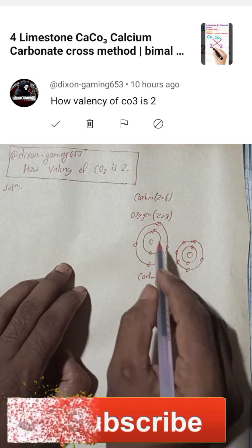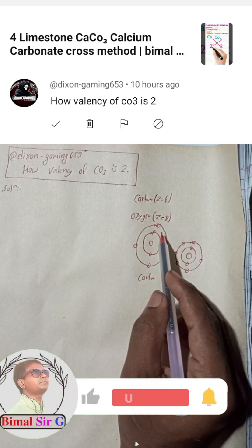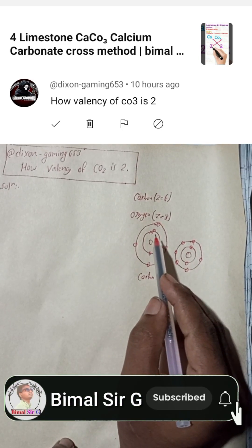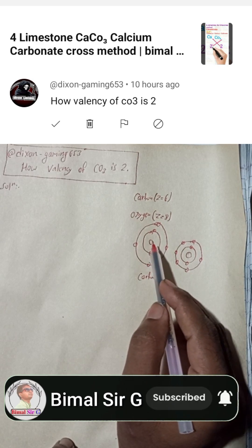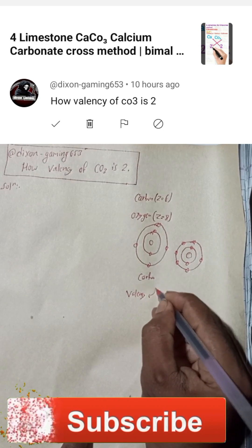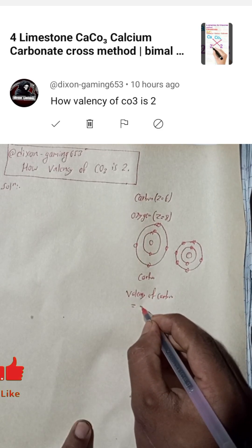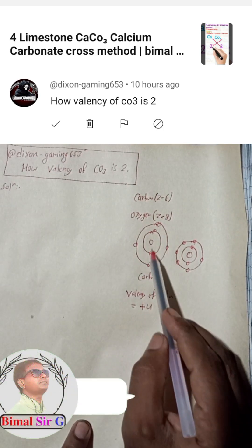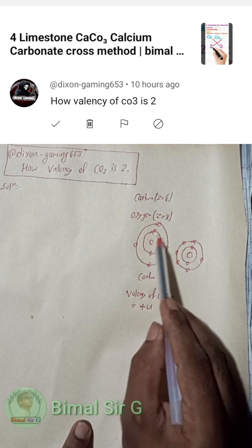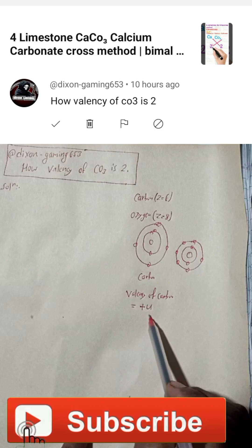Carbon needs 4 electrons to get the octet, so it will try to gain 4 electrons. But if it loses 4 electrons, it will be duplet. So the valency of carbon is plus 4, because if it donates 4 electrons, the donor will be positive. If it gives to others, it will be stable. So the valency of carbon is plus 4.